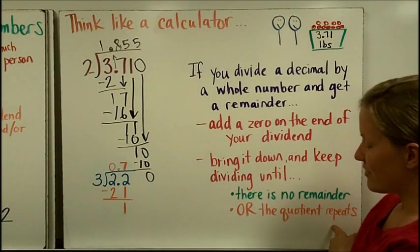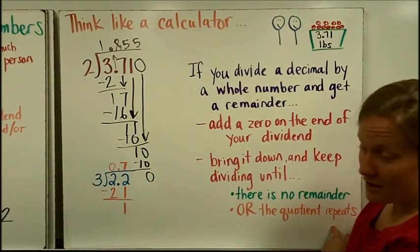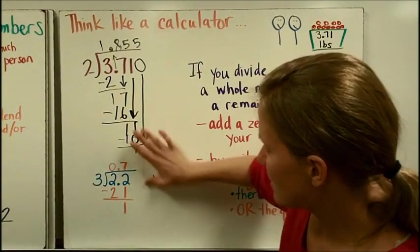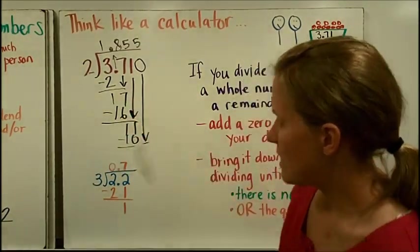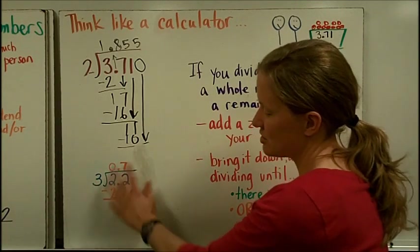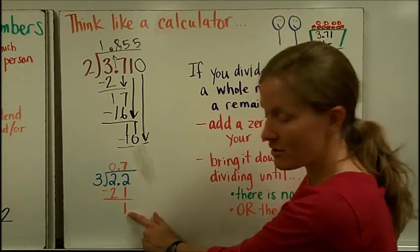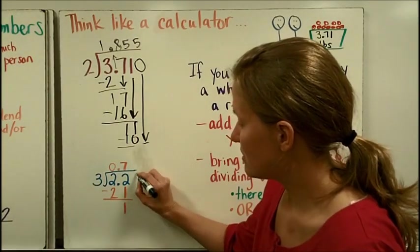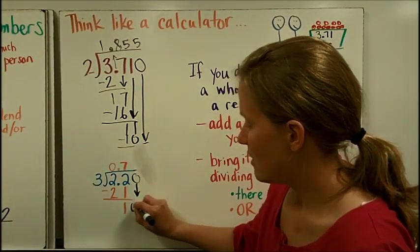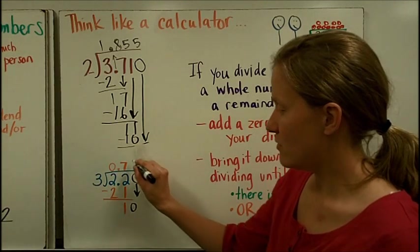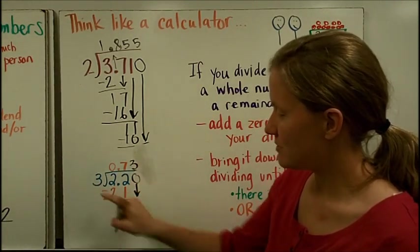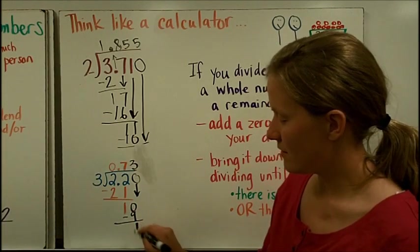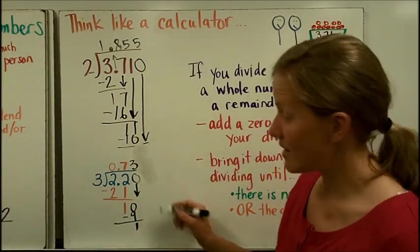But sometimes you're going to find out that the quotient is going to repeat. And I'm going to show you what that looks like. Let's erase this so we have some room to work here. And you can see I've already just started this division problem, and then I get here to where I have the remainder. So I'm going to add a zero, just like our direction said. Bring it down. 3 goes into 10 three times. 3 times 3 is 9. 10 minus 9 is 1. Get that 1 again. So I still have a remainder.